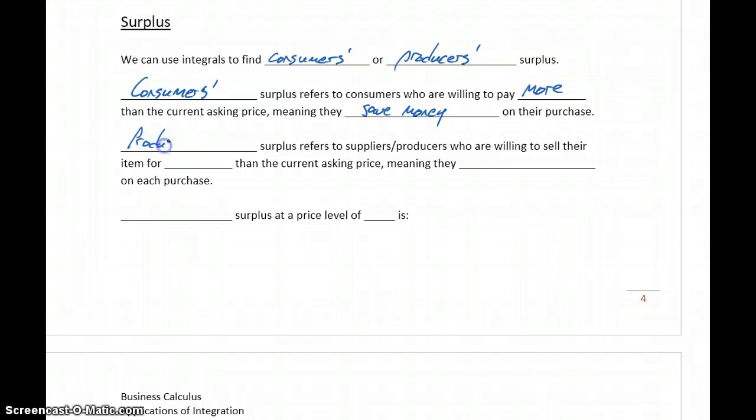Producer surplus refers to suppliers or producers who are willing to sell their item for less than the current asking price, meaning they make more on each purchase. So if you're willing to sell an item for as low as $75, but you're able to sell it for $100, $125, you're making more.